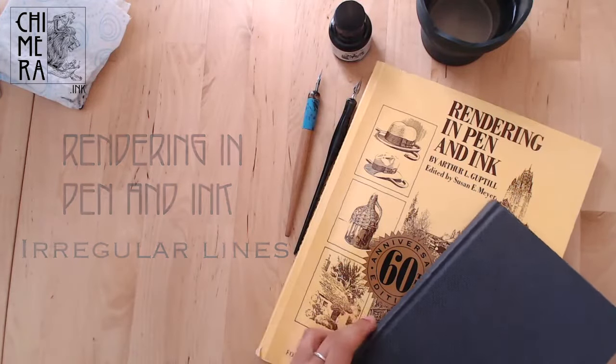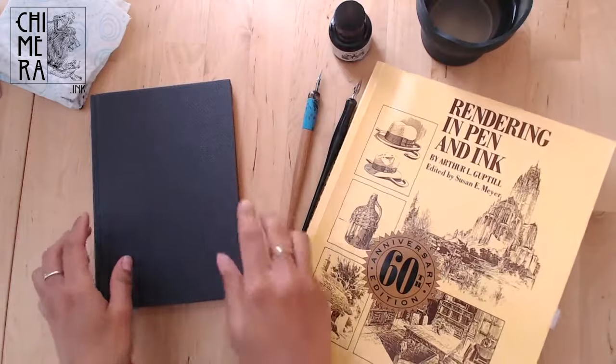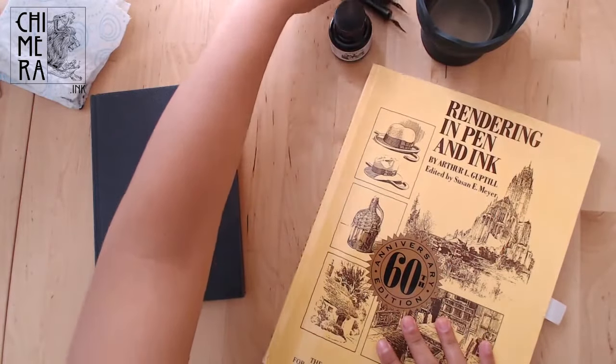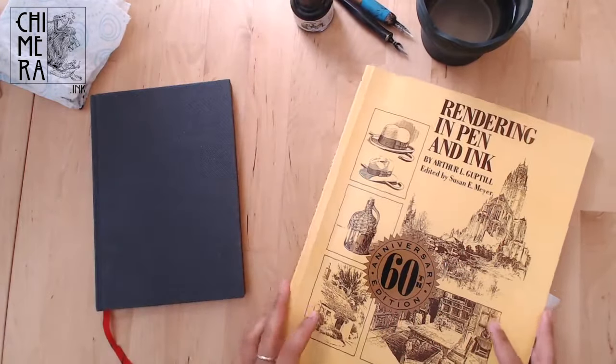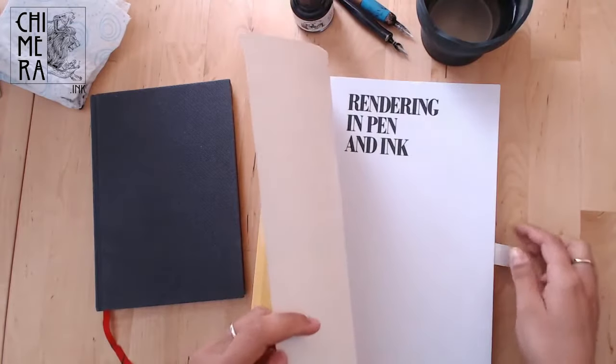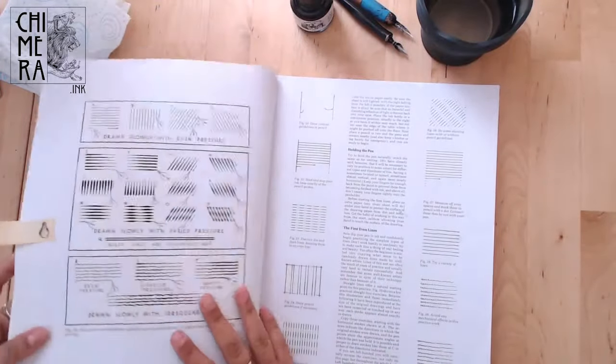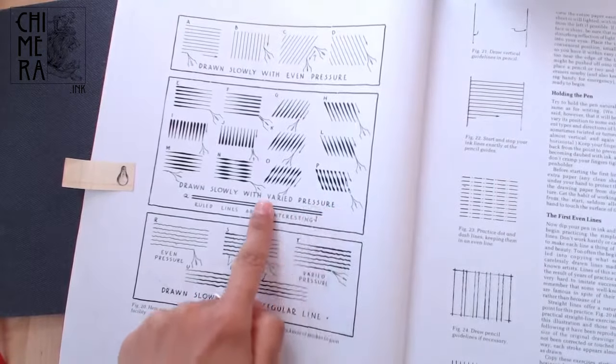Hello and welcome back everyone! So this week let's look into the irregular line exercises. We stopped on exercise M last week and there are still N through T to go to finish that section. So let's dive right in.